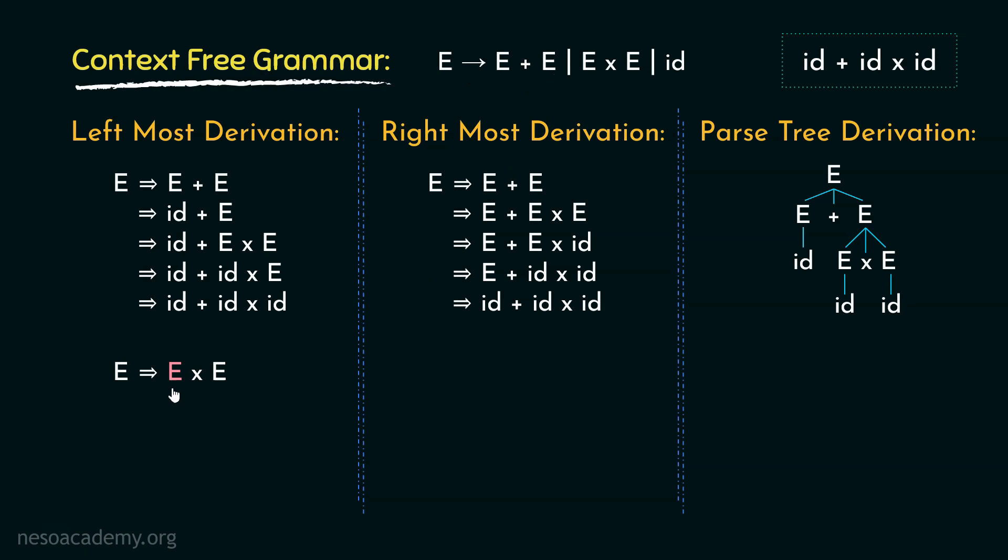So expanding the leftmost E, our derivation becomes E + E × E, and now we have achieved the format. From all these, this is the leftmost non-terminal. And now we will simply derive id from this because the format is already achieved.